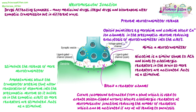Another example: drugs can block the reabsorption of neurotransmitter. Amphetamines block the transporter proteins that allow the reabsorption of dopamine into the presynaptic neuron. Normally, spare neurotransmitter would be broken down by enzymes or actively transported back into the presynaptic neuron. Amphetamines block those transport proteins, so dopamine stays in the synaptic cleft for longer and builds up — more receptors get stimulated than normal, acting as a stimulant and making signals more likely to be passed on.